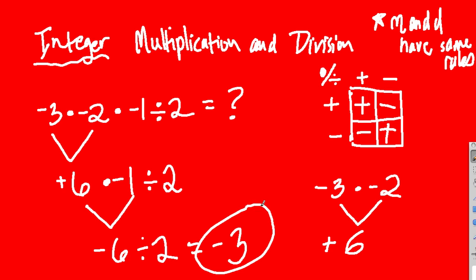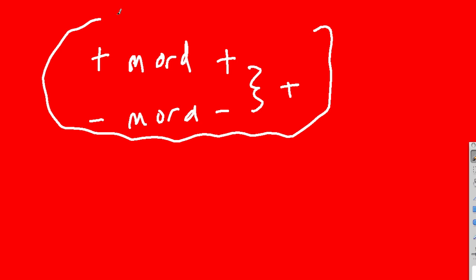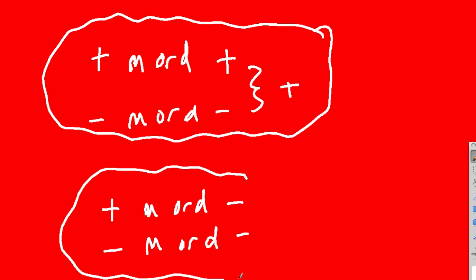Another way to simplify this: if the two signs match — whether it's positive and positive, or negative and negative — the result is positive. If the two signs don't match — negative and positive, or positive and negative — the result is negative. So a positive multiplied or divided by a positive, or a negative multiplied or divided by a negative, equals a positive. And a positive multiplied or divided by a negative, or a negative multiplied or divided by a positive, gives a negative.